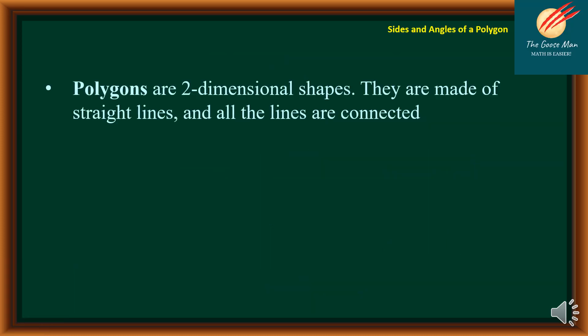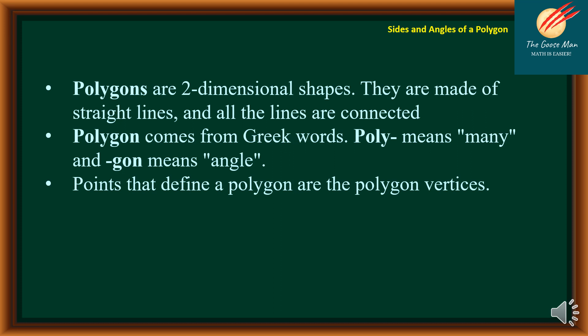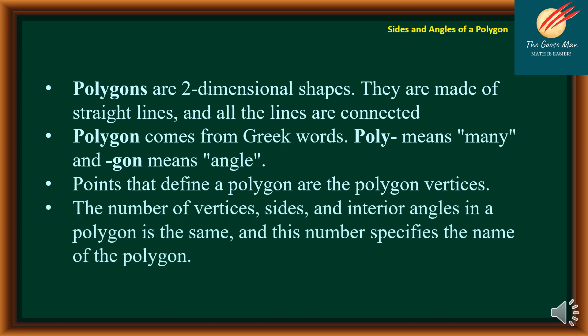Polygons are two-dimensional shapes. They are made of straight lines and all lines are connected. Polygons comes from the Greek word — poly means many and gon means angle. Points that define a polygon are the polygon vertices. The number of vertices, sides, and interior angles in a polygon is the same, and this number specifies the name of the polygon.